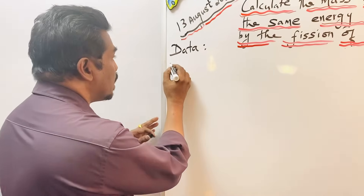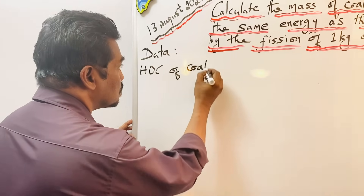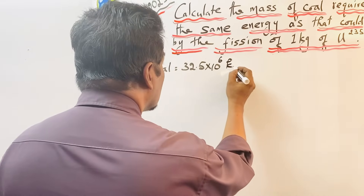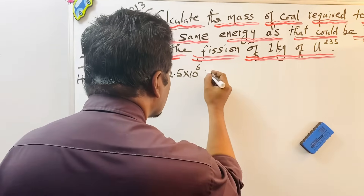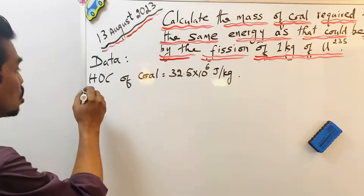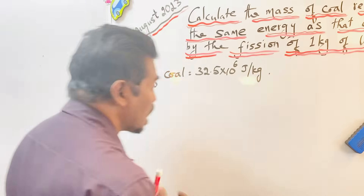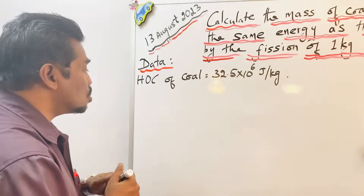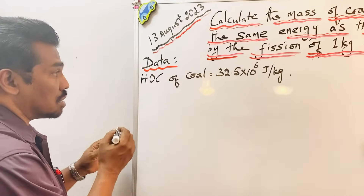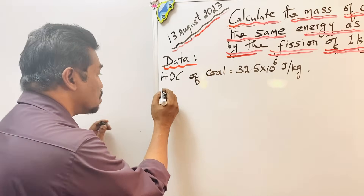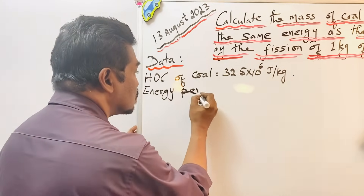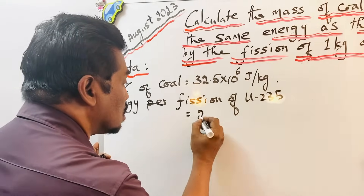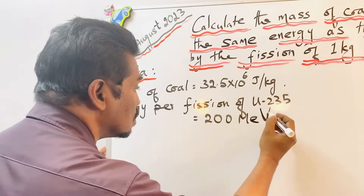The first piece of data is the Heat of Combustion (HOC) of coal, which is 32.5 × 10⁶ joules per kilogram. HOC means heat of combustion — the amount of energy released when a unit mass of a substance is completely burnt. So HOC of coal is 32.5 × 10⁶ joules per kilogram.